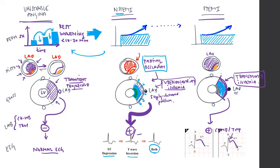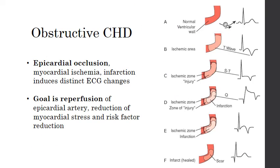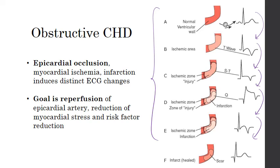Just to reiterate: unstable angina, NSTEMI, and STEMI are all on a continuum and can all progress quite quickly within the matter of minutes. This slide shows a summary of how obstructive CHD evolves on an ECG — a more concise evolution from one ischemic injury to the next as it progresses over time.